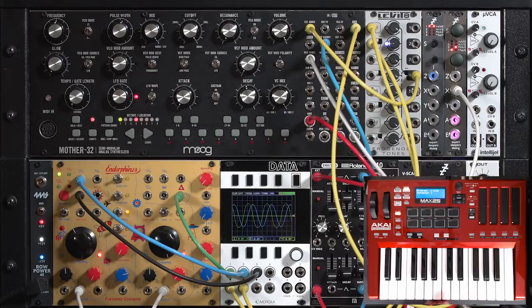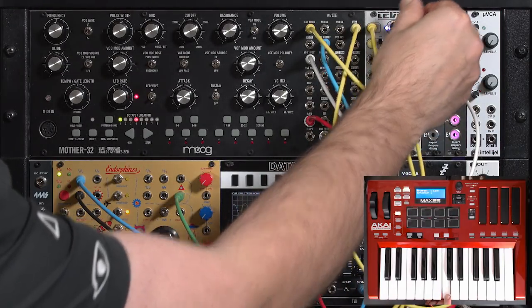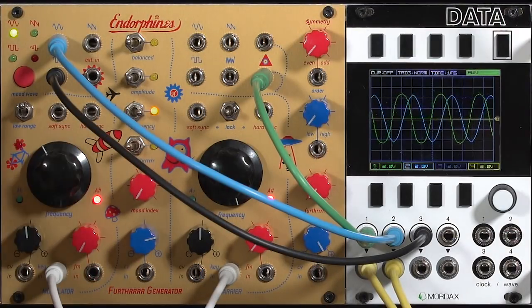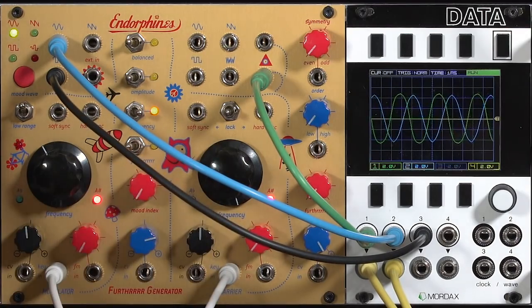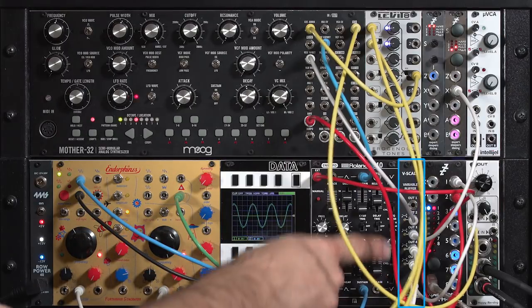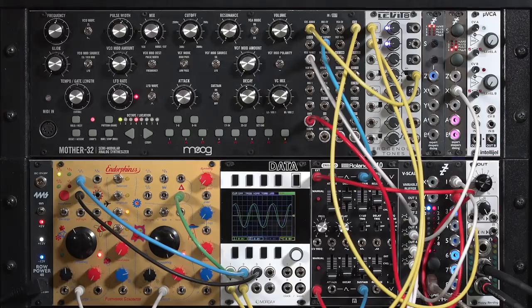I've tuned up the oscillators to middle C. One thing you will deal with when you change the core is that the tracking will go off a little bit across the keyboard for the carrier. Again, there's a trimmer in the back. Or in my case, I like to use the AGH V scale so I can trim it from the front panel without having to take apart my modular.